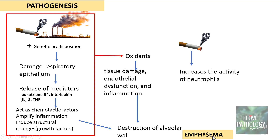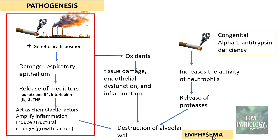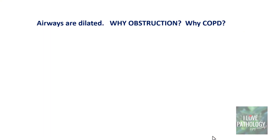Smoking also increases neutrophil activity, and neutrophils release elastases which lead to destruction of alveolar walls. If the patient is also smoking and has congenital alpha-1 antitrypsin deficiency, that leads to imbalance of the normal protease-antiprotease mechanism, resulting in uninhibited protease activity and destruction of alveolar walls — this summarizes the pathogenesis of emphysema.